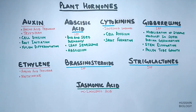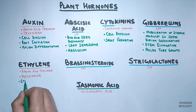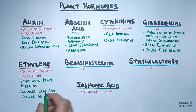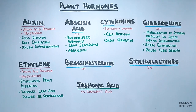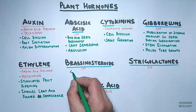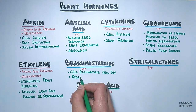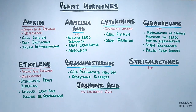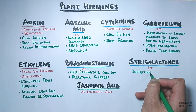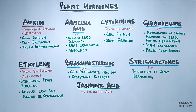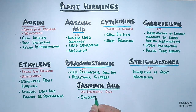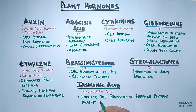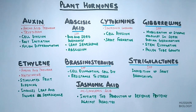Ethylene is the only gaseous plant hormone; it stimulates fruit ripening and also induces leaf and flower senescence. Brassinosteroids help in cell elongation, cell division, and resistance to stress within the plant. Strigolactones cause the inhibition of shoot branching. Jasmonic acid produces defensive proteins against parasites. These are the major functions of these hormones.